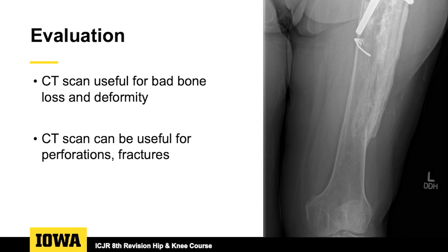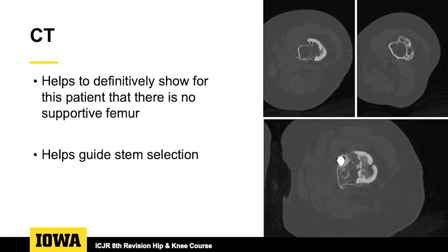CT scan I occasionally use when planning for femoral reconstruction. The times I lean heavily on CT scan are when you have really bad bone loss and you're not sure if you have supportive femur at all, and when planning through deformity — also helpful in the setting of fractures and femoral perforations like seen here. For this patient, the femoral CT scan definitively shows no supportive femur throughout the canal, which helps guide your stem selection and pushes you away from some options.